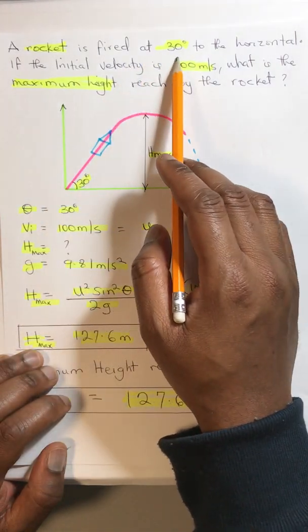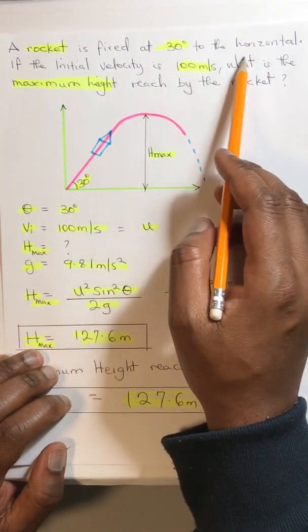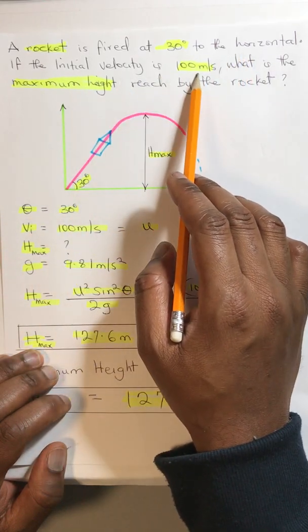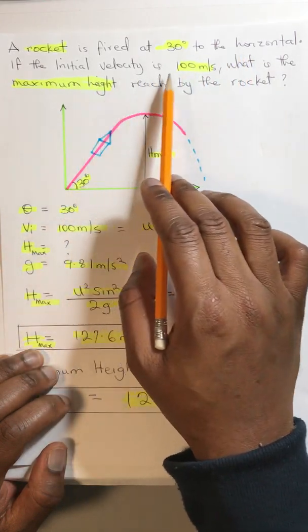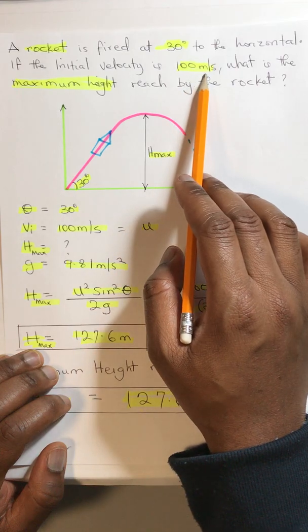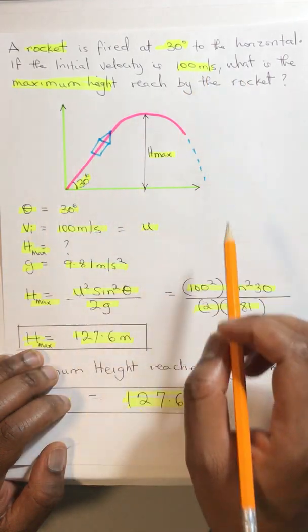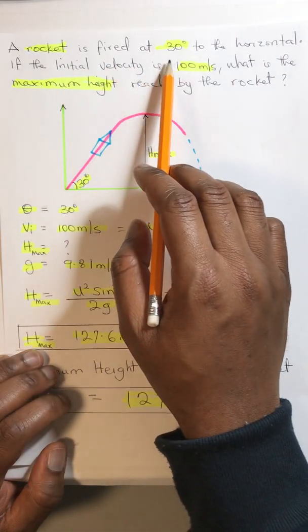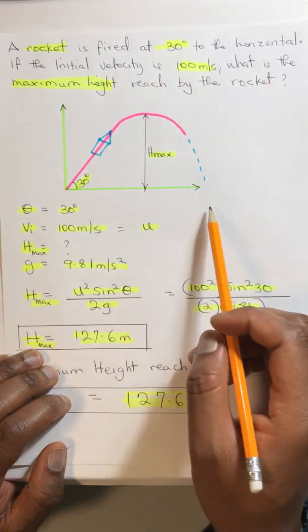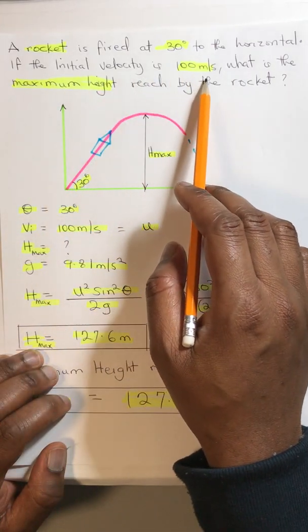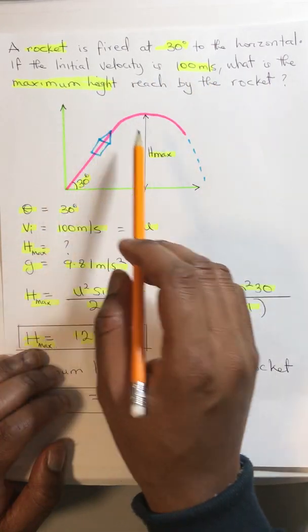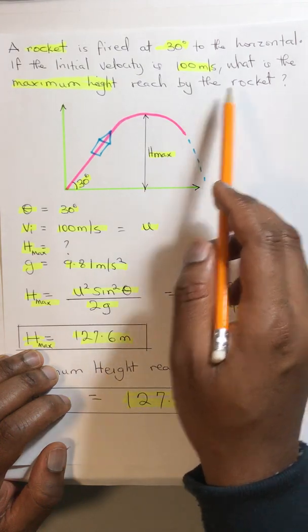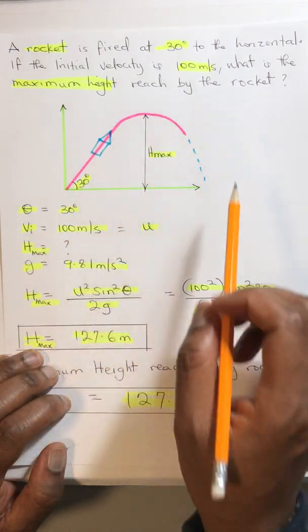A rocket is fired at 30 degrees to the horizontal level. If the initial velocity is 100 meters per second, what is the maximum height reached by the rocket?